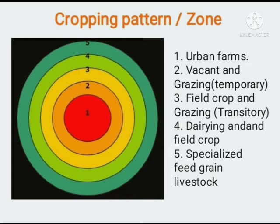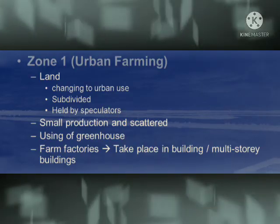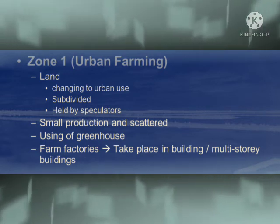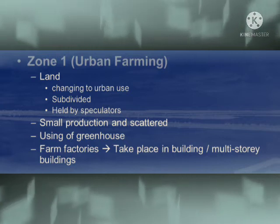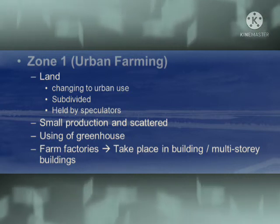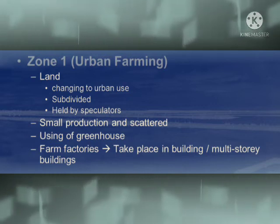Zone one is known as urban farming. The urban farming zone is a hodgepodge of small producing units scattered through the already subdivided outer suburban environment, which favors activities such as poultry keeping, greenhouse growing, and mushroom raising.